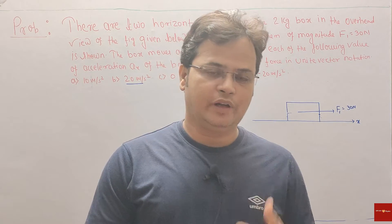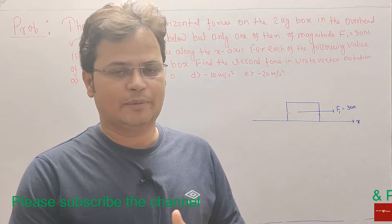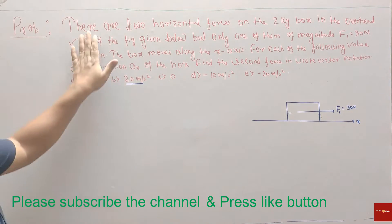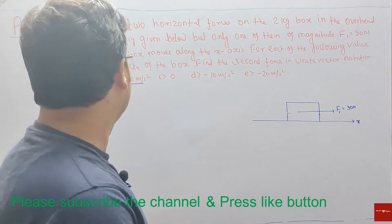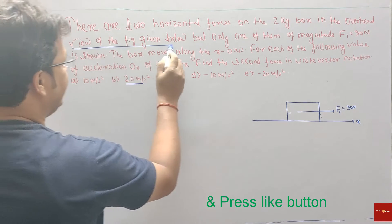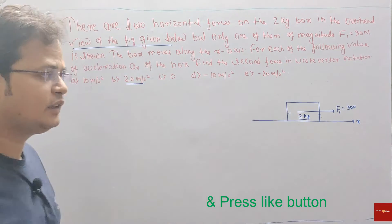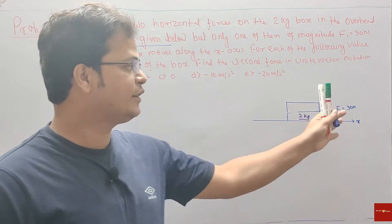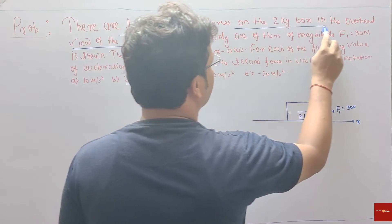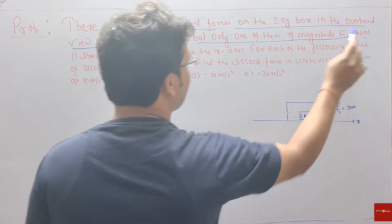Hello friends, we have a very simple problem related to the concept of equilibrium of forces or equilibrium of particles. There are two horizontal forces on a 2 kg box. In the overhead view of the figure given below, only one of them, of magnitude F equal to 30 Newton, is shown.